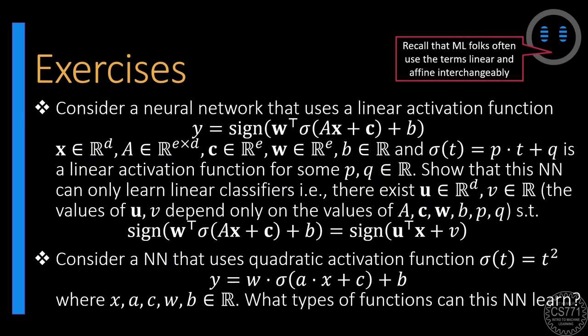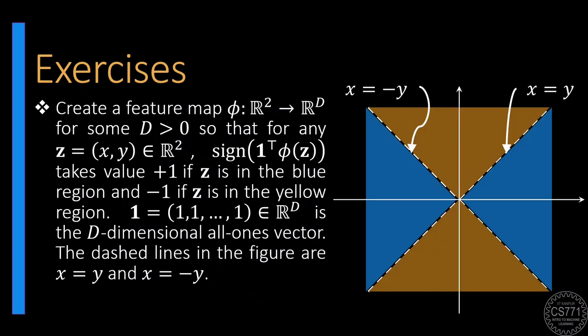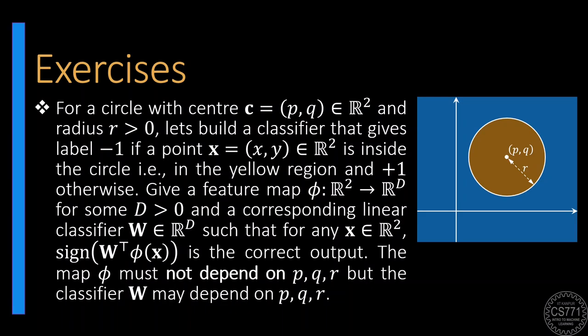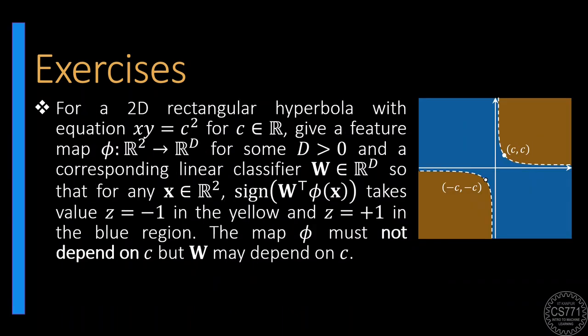To get more exercise on feature transformations that can help make linear models do well on non-linear problems, attempt these simple geometric exercises. In the first exercise, we wish to implement a diagonal classification pattern under the restriction that the classifier must have no bias term and the model vector must be the all-ones vector. In the second exercise, we wish to use a binary classifier to distinguish the interior of a circle from its exterior, keeping in mind that the model vector can depend on the exact position and size of the circle. The third exercise requires something similar but using a hyperbola instead of a circle.